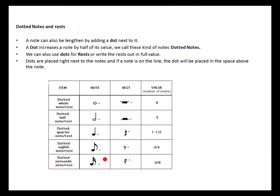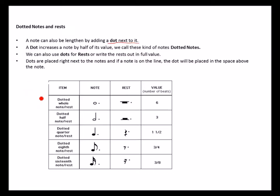Moving on to dotted notes and rests — a dot is another way of extending or lengthening notes. A note can be lengthened by adding a dot next to it. A dot increases a note by half of its value, and this is different from using a tie.